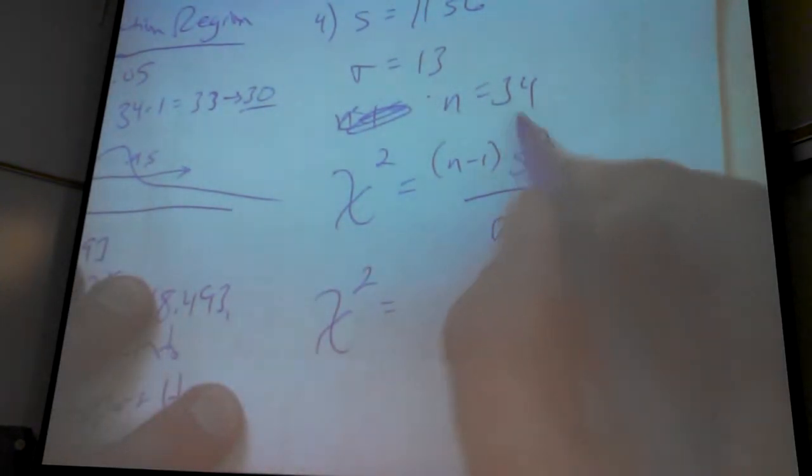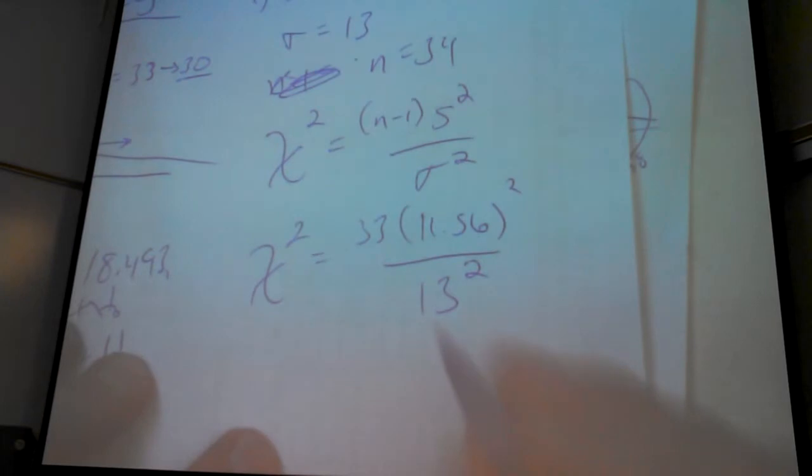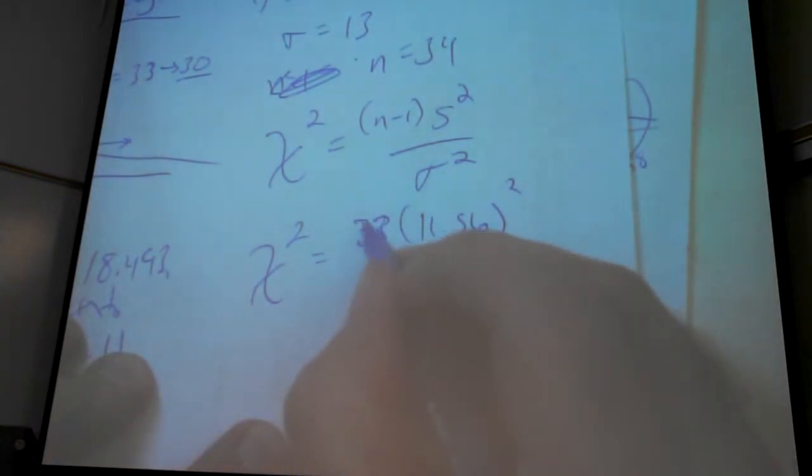So Chi squared would be 34 minus 1, 33, times 11.56 squared, divided by 13 squared. Come to 33.